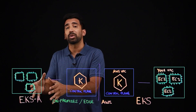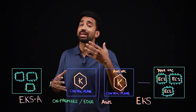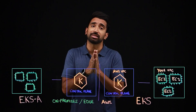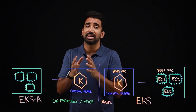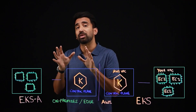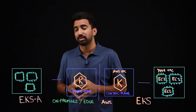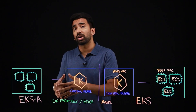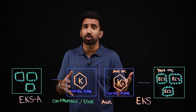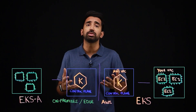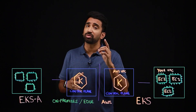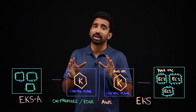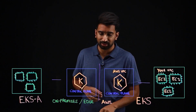EKS Anywhere is an open source solution to enable customers to run Kubernetes clusters on their own infrastructure. And while EKS Anywhere is open source and free to use, you can also get support directly from AWS through a subscription.